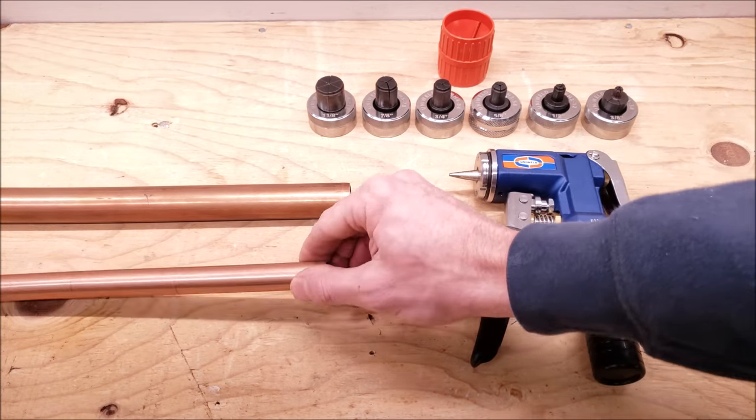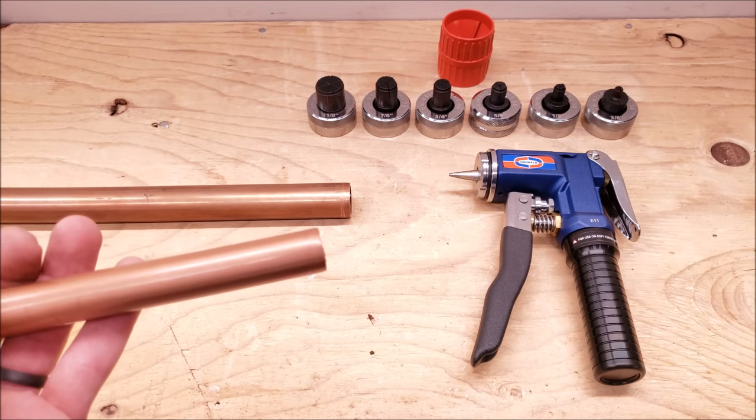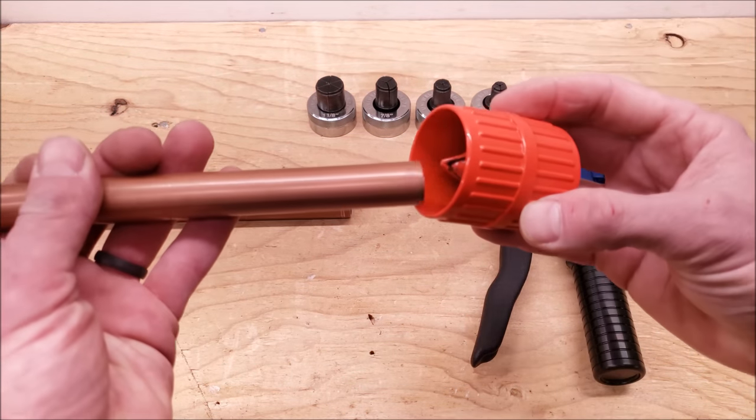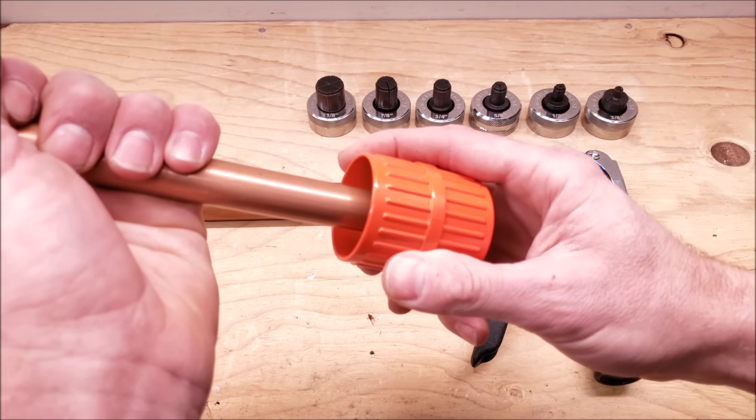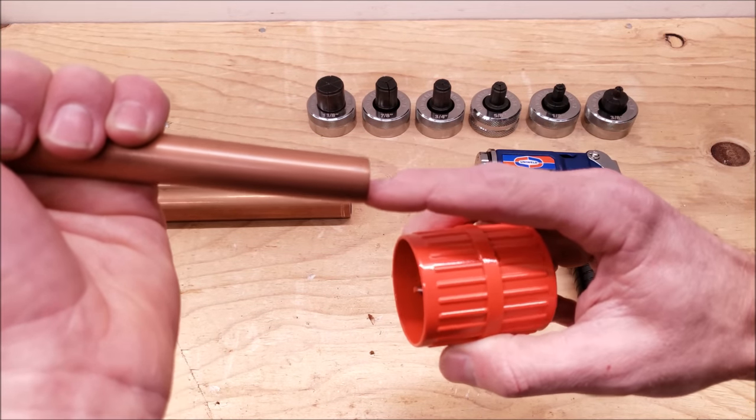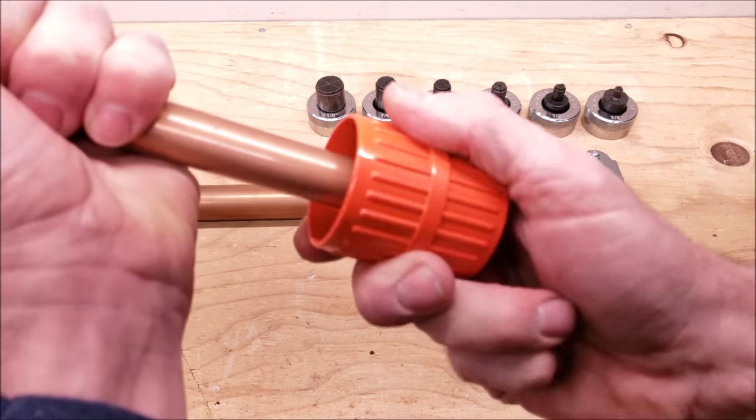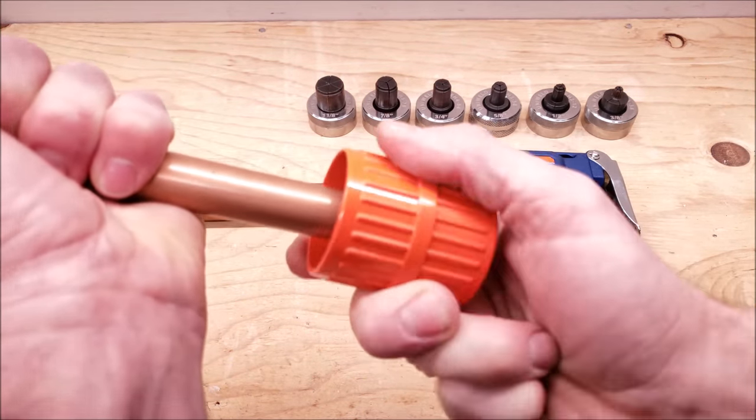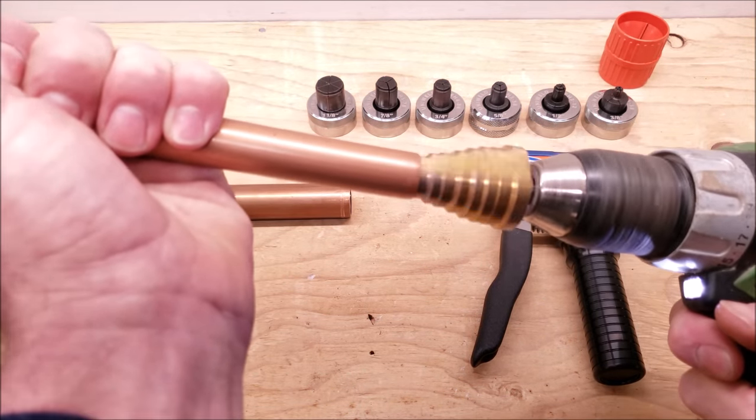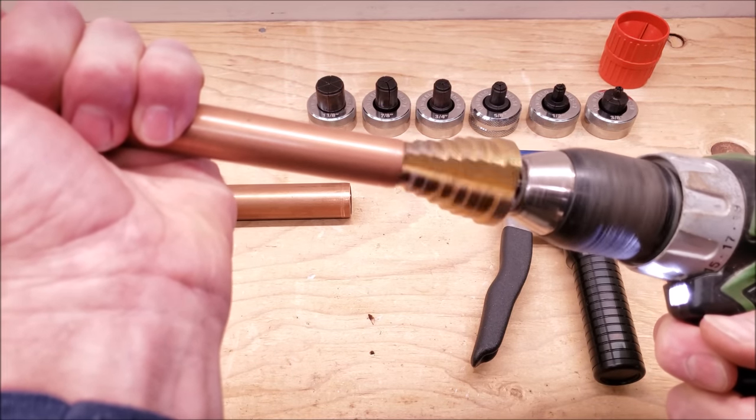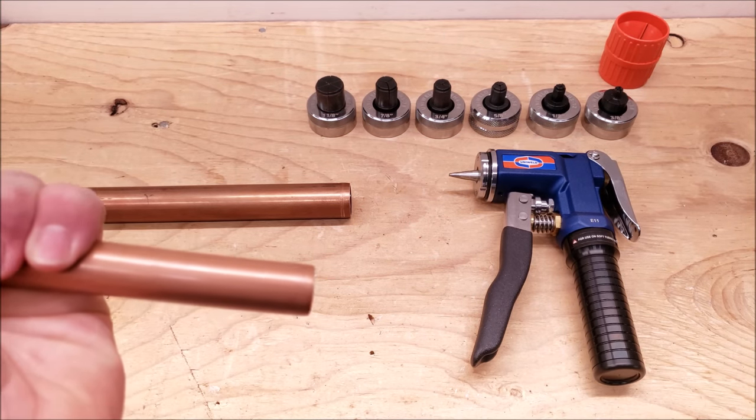So the first thing that we want to do is take this copper tubing, and we're going to either use a manual reamer like this, and you're going to tilt the copper pipe downwards to make sure that any of the little shards fall out of the tubing. You don't want to get that into the compressor. So you can do that, or you can use one on a drill.